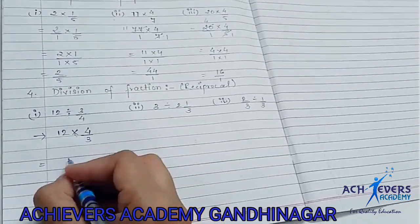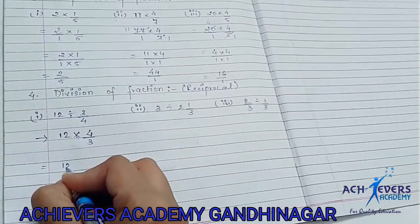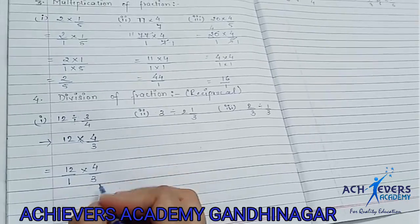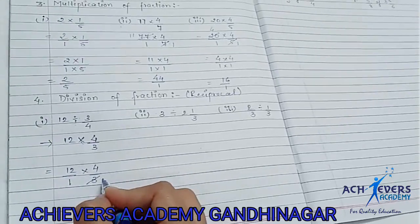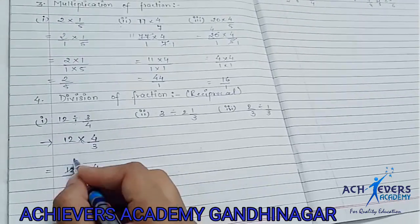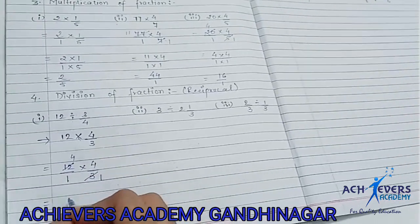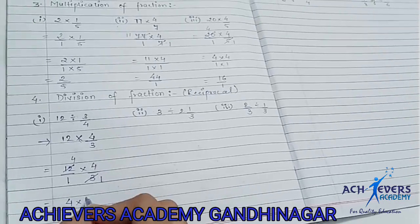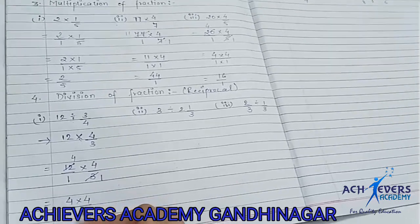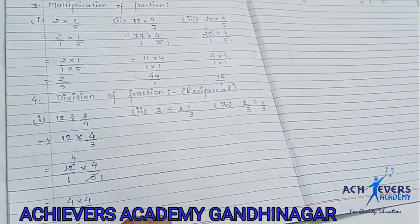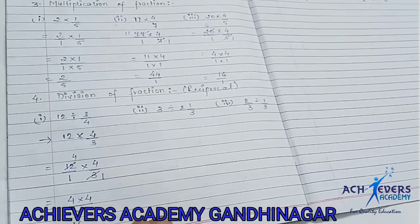So let's write this: 12 with denominator 1, multiplied by 4 by 3. Cancel it — 3 ones are 3, and 3 fours are 12. Now we have 4 fours are 16, and 1 ones are 1. That means the answer is 16 by 1.